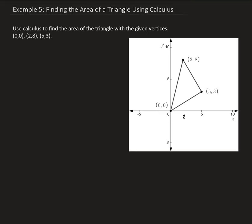In this example, we want to use calculus to find the area of the triangle with the given vertices. We're given the vertices of the origin at (0,0), (2,8), and (5,3). In order to do this, we need to first find the equations of each of these corresponding lines — the line between the origin and (2,8), between (2,8) and (5,3), and between the origin and (5,3).